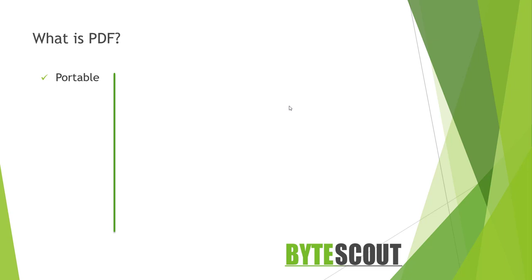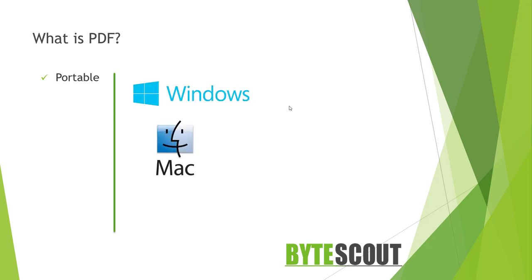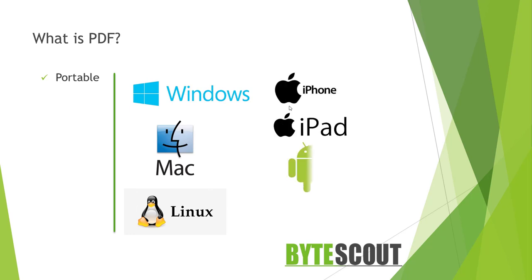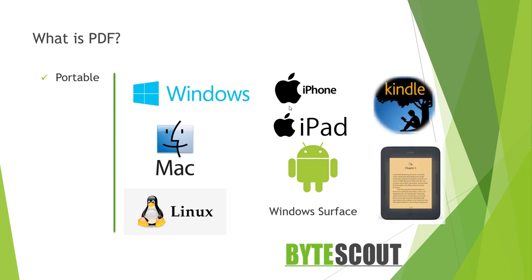Now let's try to understand it in detail, starting with Portable. As the name implies, a PDF can be read by almost all screen devices available today. That includes all flavors of computers from Windows to Mac to Linux, and mobile devices like iPhone, iPad, Android, and Windows Surface. Even most handheld e-readers like Kindles and Nooks can also read PDFs, though they can rarely display the interactive elements of PDF.